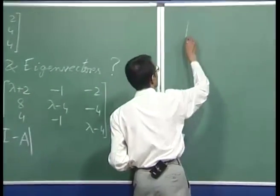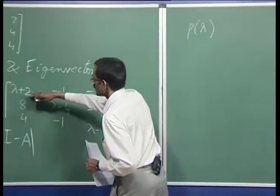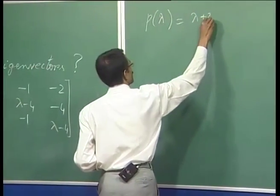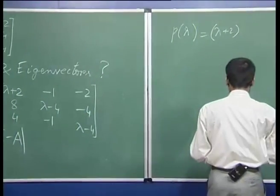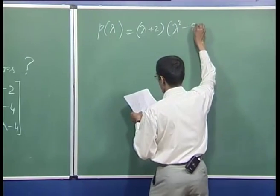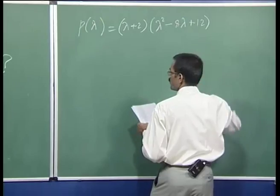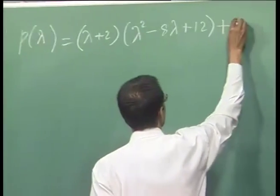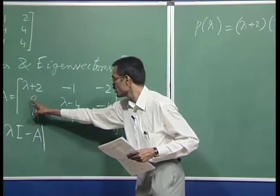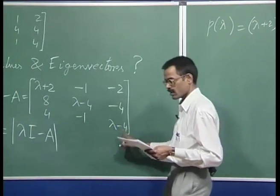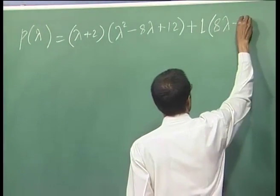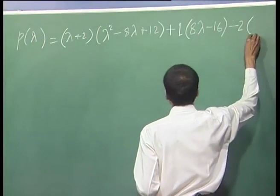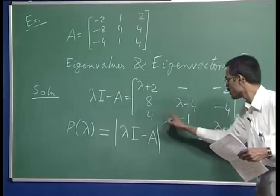You can expand from here: take lambda plus 2 into this, this minus this. Lambda plus 2 gives you lambda squared minus 8 lambda plus 12, then minus this minus 1, which gives plus 1 into the determinant from these 4 elements — that gives 8 lambda minus 16 plus this minus 2 into the determinant from these.